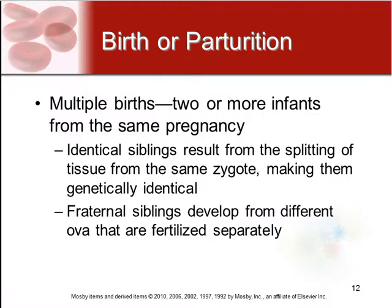Multiple births are when there are two or more infants that occur during the same pregnancy. They can be divided into either identical siblings or fraternal siblings. Identical siblings result from the splitting of tissue made from the same zygote, which makes them genetically identical.